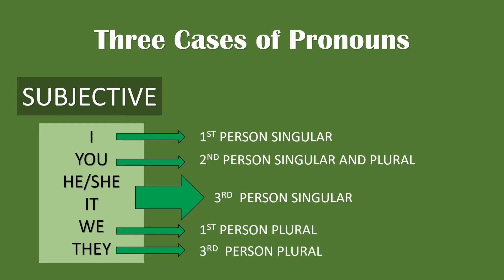What do we mean by first person singular, second person singular and plural, and so on and so forth? We know that singular pertains to only one and plural pertains to two or more. But what about person? First, second, and third person are ways of describing points of view.